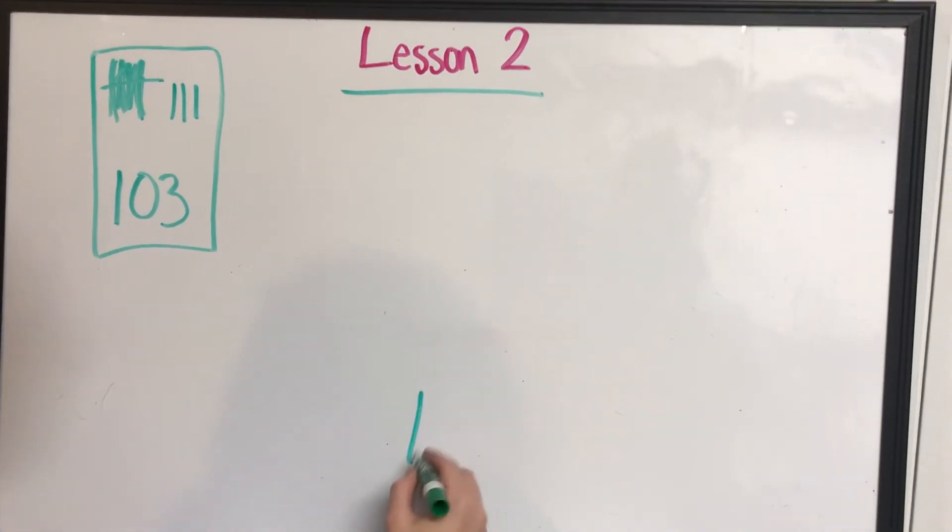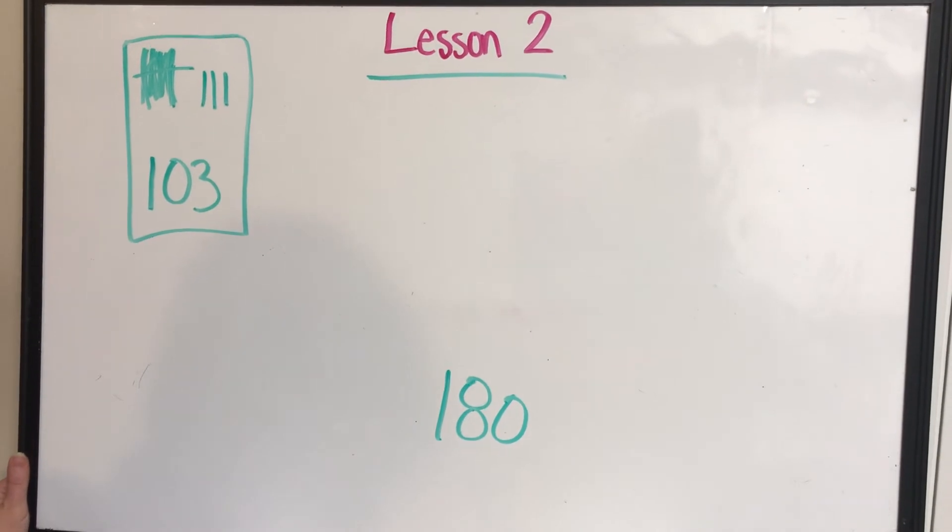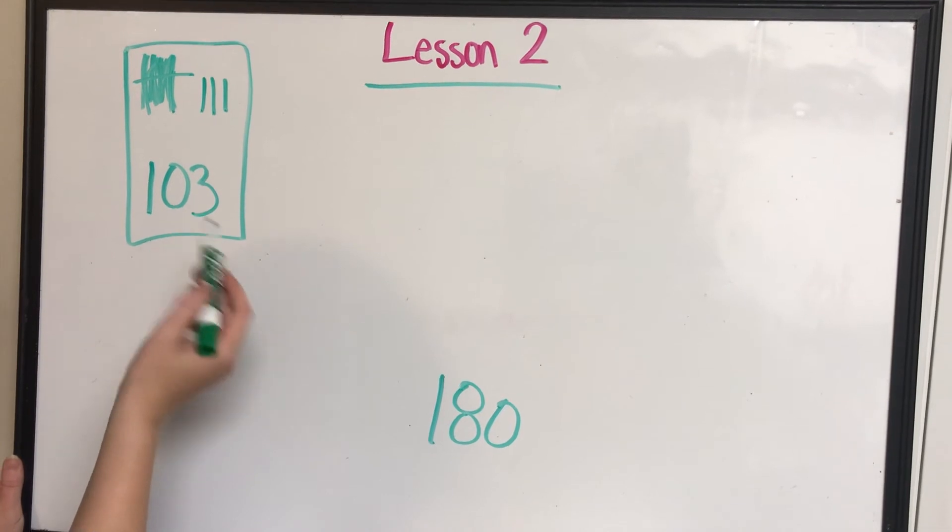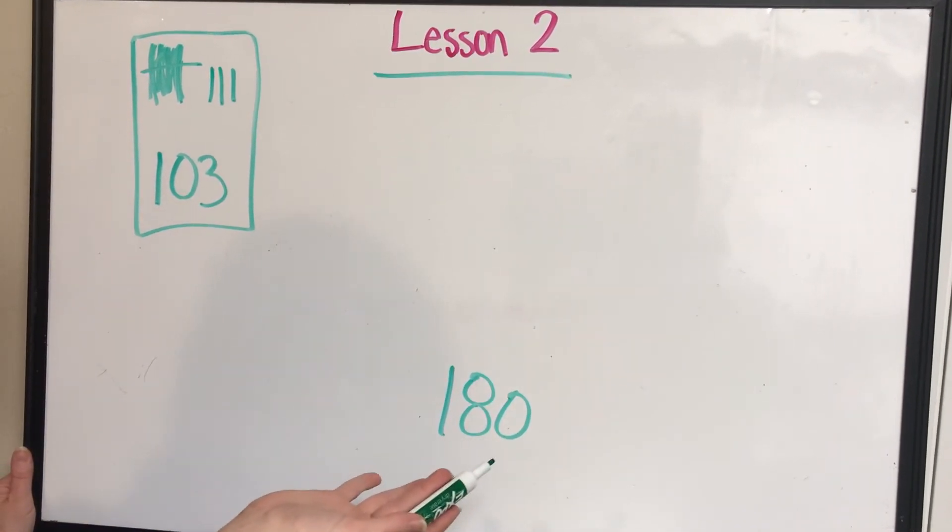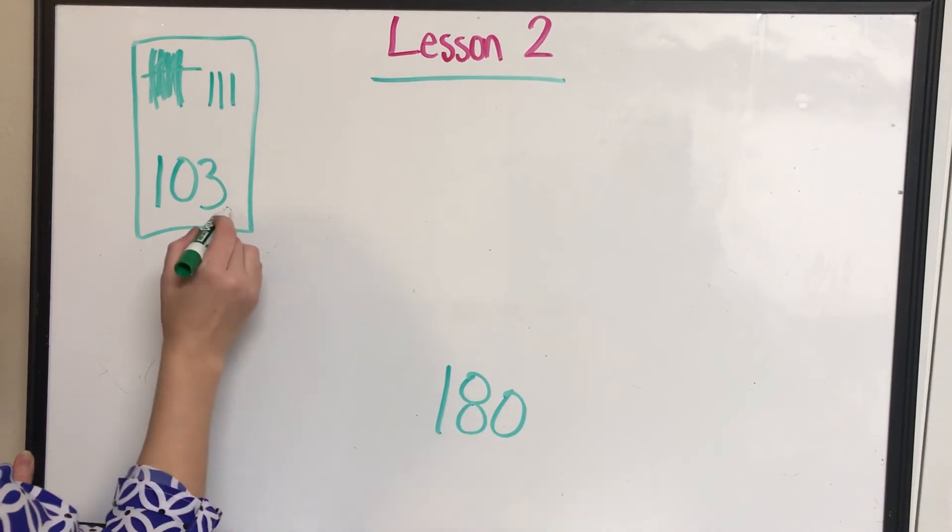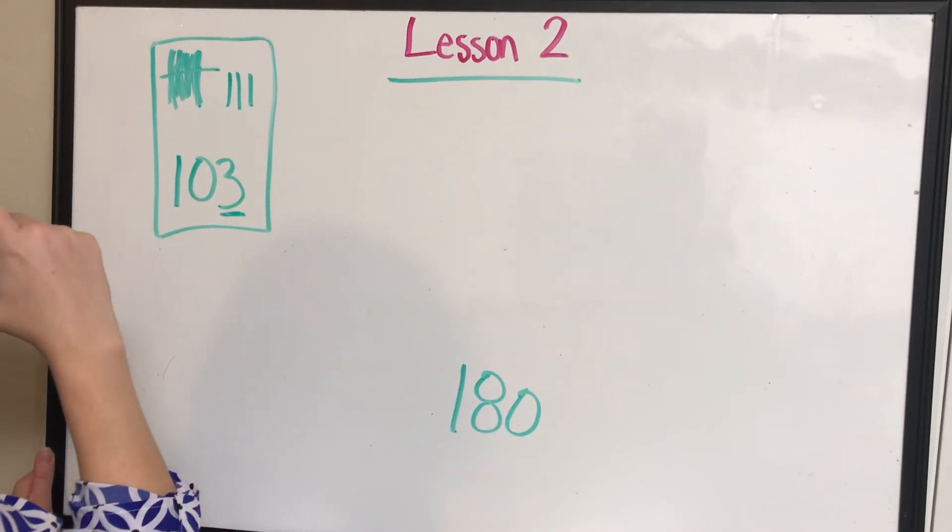I'm going to count up to 180. All right. So now if I'm counting up to 180, can I use another hundred square? No, I can't because 103 plus 100 would be 203. That's too much. Can I use a tens? No, I can't because look in my ones place. I have a three. I don't have a zero. I cannot add a tens.